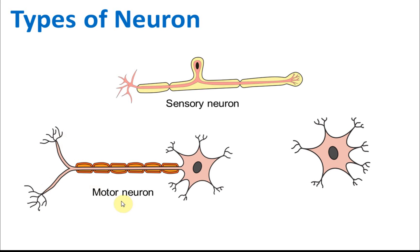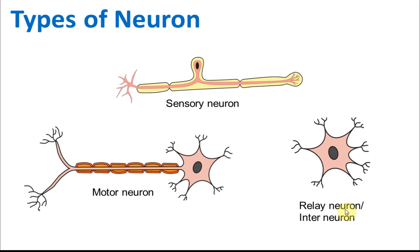The impulse is sent to the effectors — the muscles. There is also another neuron that connects the sensory and motor neurons together, and it's called the relay neuron, or interneuron. These are the three types of neurons that you need to know, so make sure you remember their names.